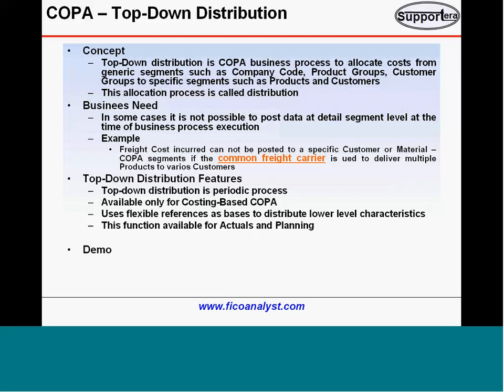In that case, what you do is when you are booking your freight cost, you will book it at, say, company code level or product group level. And then later on you will allocate it — you will do the top-down distribution.